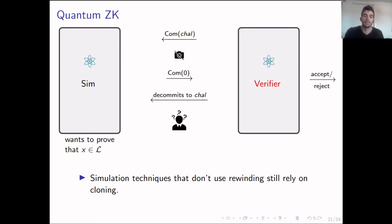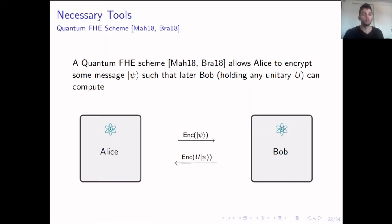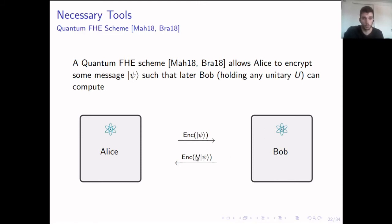The solution was given by papers from Anathanapalay and Butaski-Shmeli, where they achieve a no-cloning extraction technique that we also use. Before presenting it, I need to introduce some necessary tools: a quantum fully homomorphic encryption scheme, which is the quantum analog of FHE where both parties can be quantum and Bob can perform homomorphic computations for any arbitrary unitary U — unitary matrices being what we use in the quantum setting to perform computations.